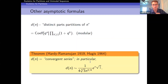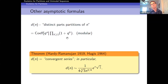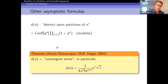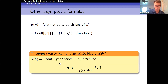Here's another asymptotic formula — for the number of distinct parts partitions of n. That's the coefficient of q^n in a product where each part appears at most once, which is also a modular form. Hardy and Ramanujan gave an asymptotic series for d(n), later improved by Haggis to a convergent series. Again the main term has an exponential of a constant times √n divided by some power of n.